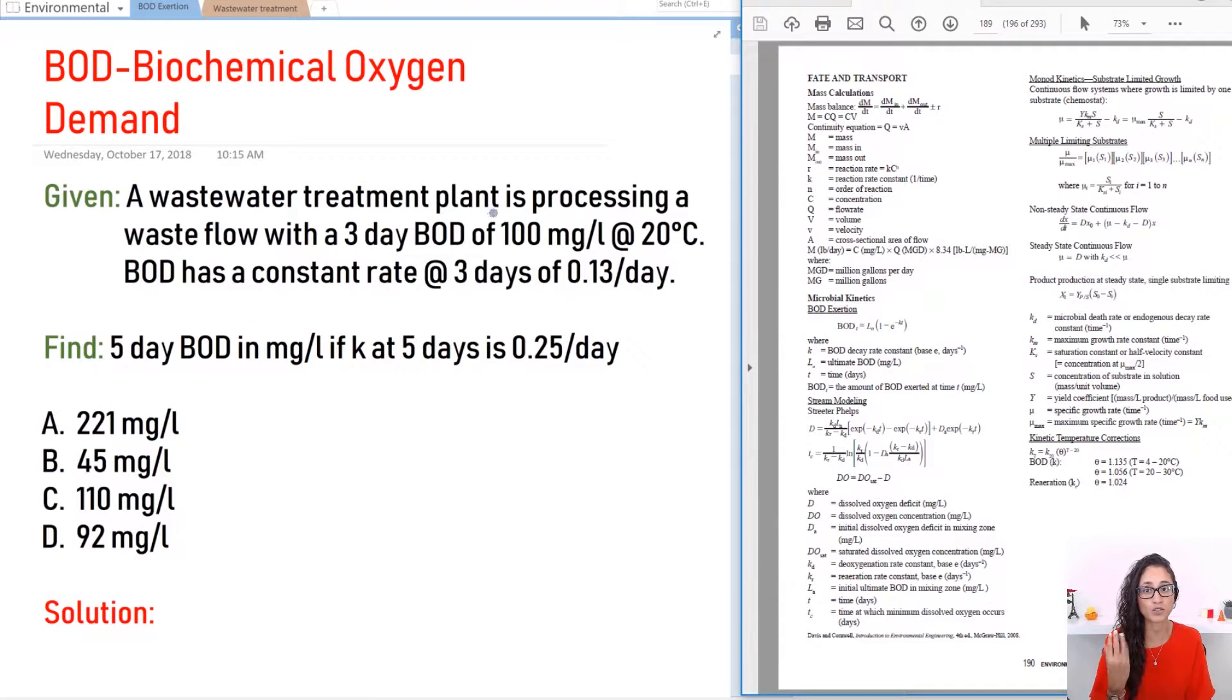Okay so we are given a wastewater treatment plant is processing a waste flow with a three-day BOD of 100 milligrams per liter at 20 degrees Celsius. Now we have a decay constant K at three days is 0.13 per day. We need to find BOD at five days in milligrams per liter and we're given K at five days which is 0.25 per day.